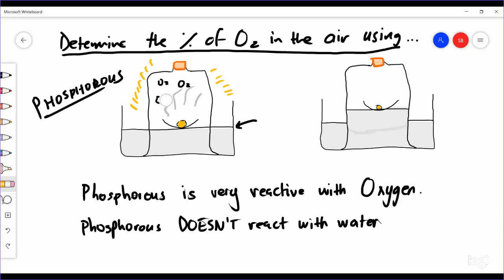Now what we've said in previous experiments is when this happens, the amount of particles in this space has become less because they are now attached to this phosphorus. And if you have less space, what's going to happen is this water level is going to rise, as you can see in this diagram over here.